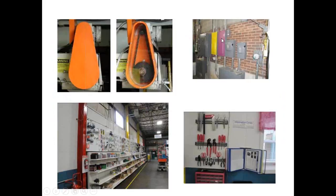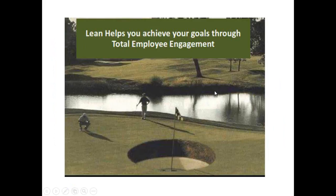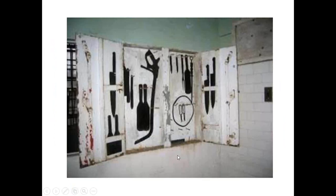Other visuals: color coding your outlets so you know what breaker to go to. Visual labels on all MRO supplies. Even visuals for TPM — having a clear cover instead of one that hides the waste. Lean helps you achieve your goals through total engagement and makes your putt a little easier. I'm hoping you got a couple of good ideas — just remember: the more visual your plant is, the more world class your plant is. The last picture I took on vacation was in the kitchen of Alcatraz prison — they use a visual management shadow board to showcase where all the knives are at all times.